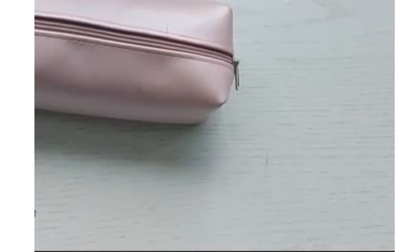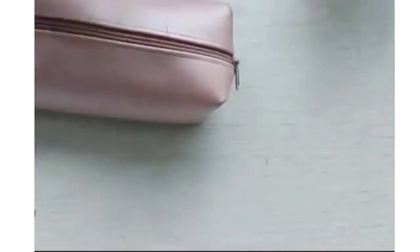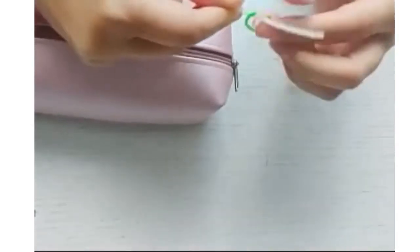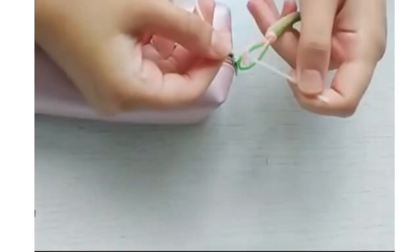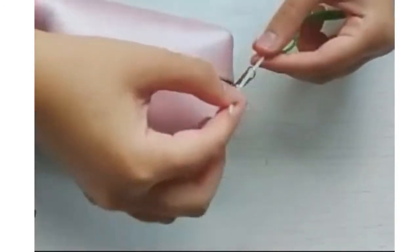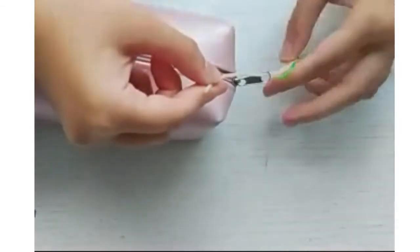First, use the third string and place it in the loop at the top of the Scooby like so. Then loop it through the zip which is on the pencil case. Then create a knot.